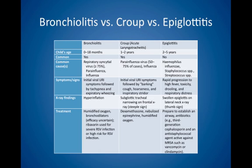Symptoms and signs: bronchiolitis presents with initial viral upper respiratory infection symptoms followed by tachypnea and expiratory wheezing. For croup, initial viral URI symptoms are followed by a barking cough, hoarseness, and inspiratory stridor. Epiglottitis presents with rapid progression to high fever, toxicity, drooling, and respiratory distress.